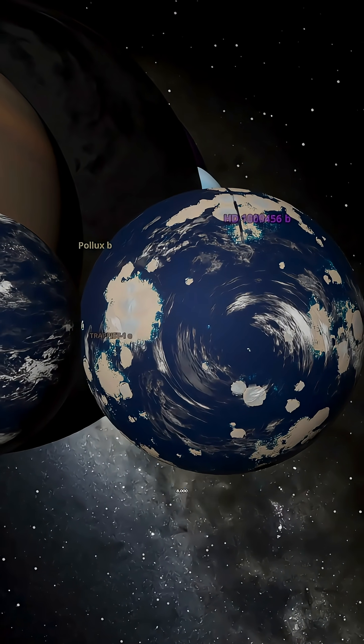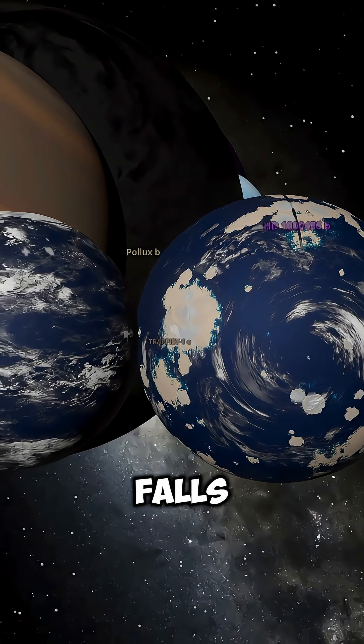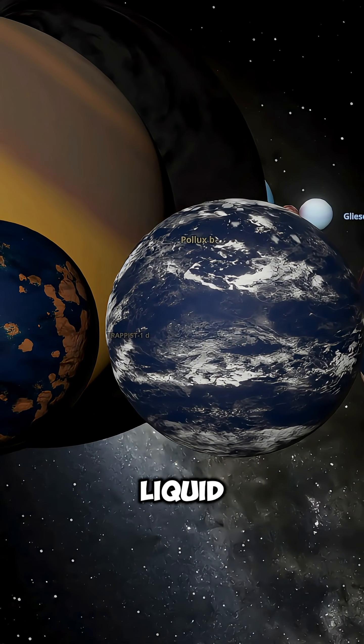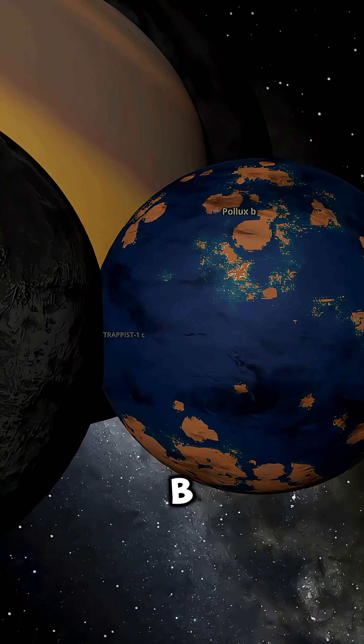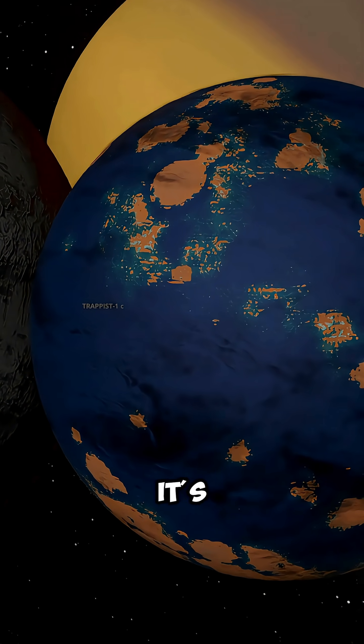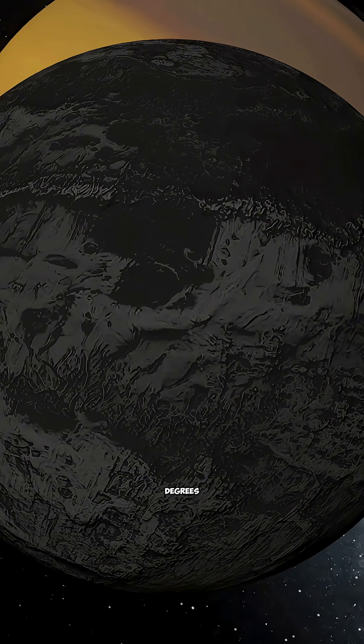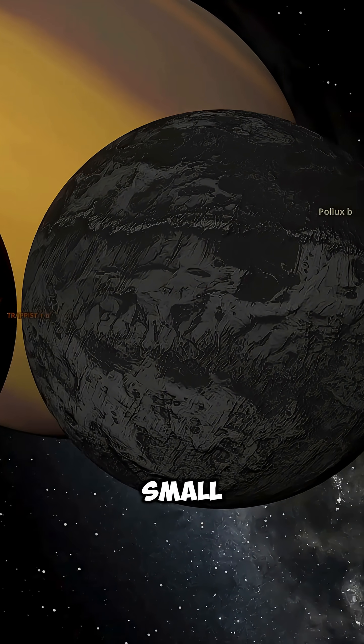Some worlds have winds blowing at over 8,000 kilometers per hour, and what falls from the sky isn't water, it's liquid glass. The planet Kelt 9b is the hottest ever discovered. It's so close to its star that its temperature exceeds 4,000 degrees Celsius, almost as hot as a small star.